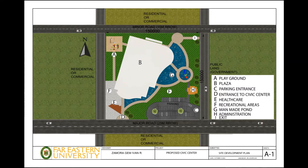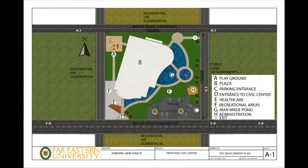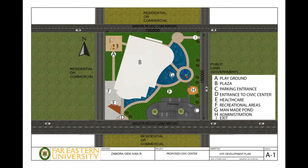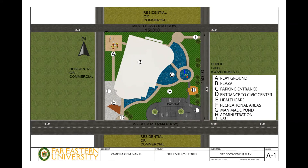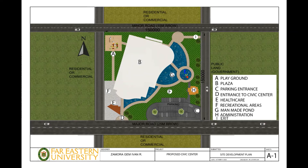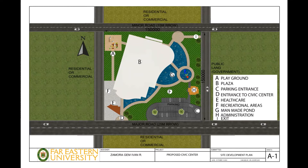For the site development plan, I planned this to attract more tourists and local people in the community. It is open to younger and older people. Zone A is the playground, zone B is the main building or plaza, and zone C is the parking entrance — since the main road is there. Zone D is the entrance to the civic center, zone E is the healthcare area, zone F is the recreational area, zone G is the man-made pond, and zone H is the administration building. I also put the exit at the top. All the letters are arranged in the drawings.